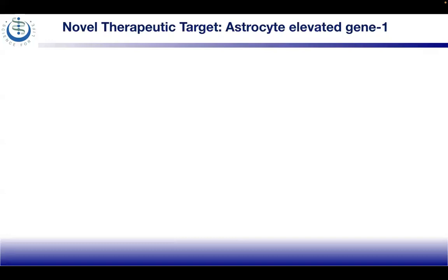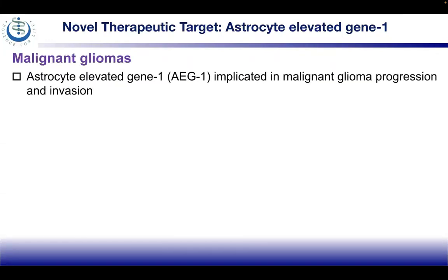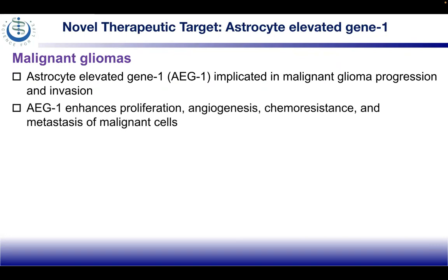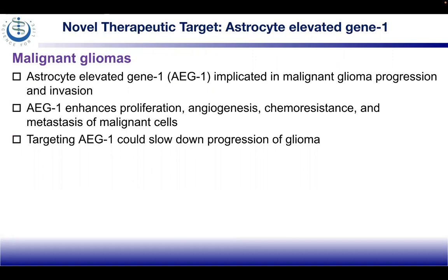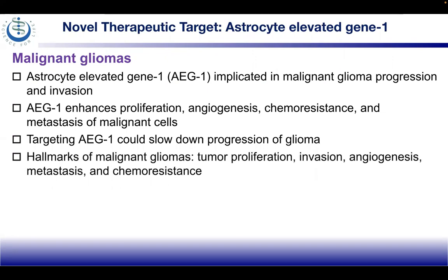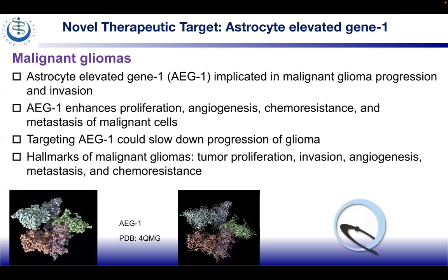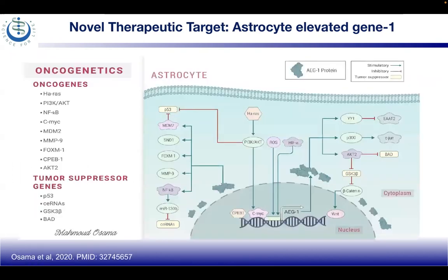Now we look at a novel therapeutic target called astrocyte elevated gene 1 (AEG1). In malignant gliomas, AEG1 is implicated in malignant glioma progression and invasion. AEG1 enhances proliferation, angiogenesis, chemoresistance, and metastases of malignant cells. Targeting AEG1 could slow glioma progression. The hallmarks of malignant gliomas are tumor proliferation, invasion, angiogenesis, metastases, and chemoresistance. The structure of AEG1 was modeled in UCSF Chimera using PDB entry 4QMQ from the RCSB.org database.